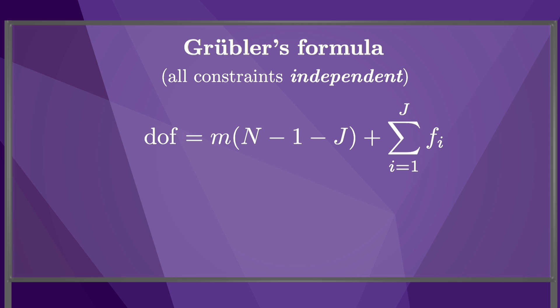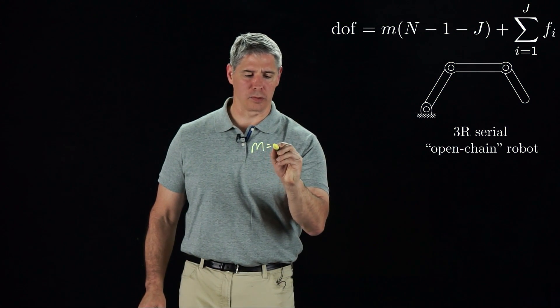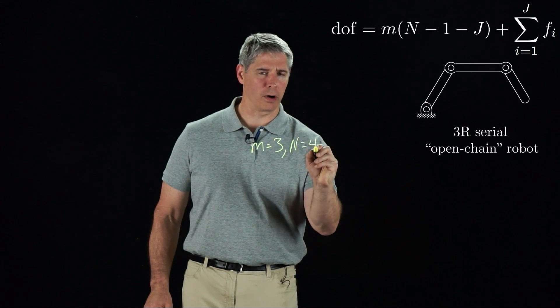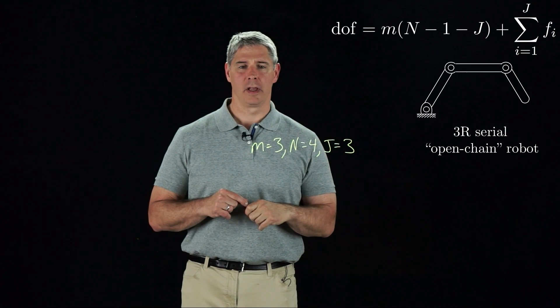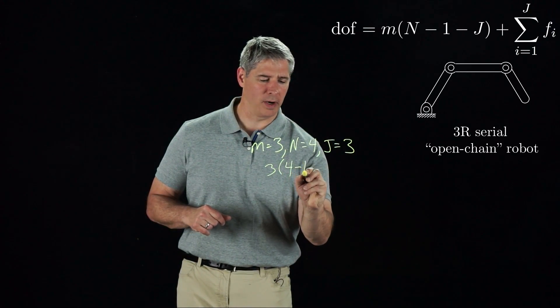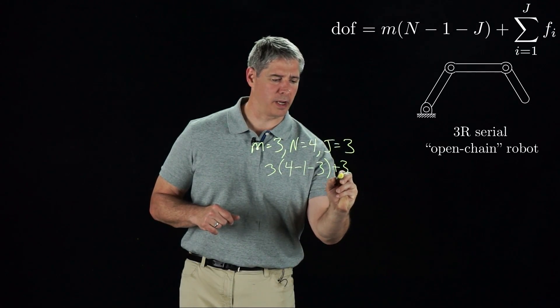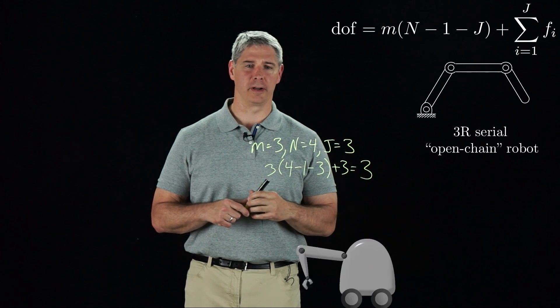Let's apply Grubler's formula to a few mechanisms. The first mechanism is called a serial or open-chain robot, because there is a single path from ground to the end of the robot. It's called a 3R robot, meaning it has three revolute joints. This planar robot has m equals three, n equals four, j equals three, and one freedom at each joint. Grubler's formula tells us: three times (four minus one) minus three plus three equals three degrees of freedom. The robot has three degrees of freedom, as we expect.